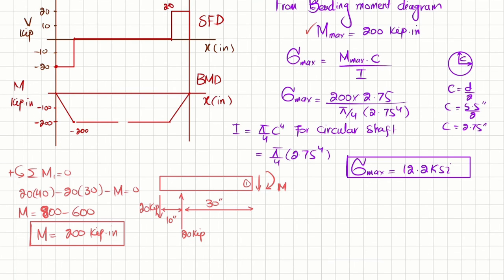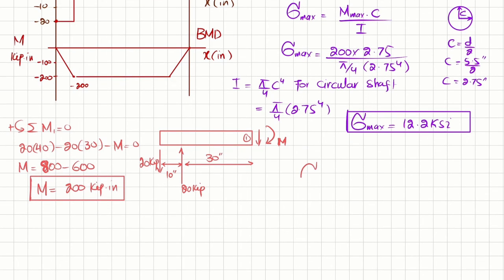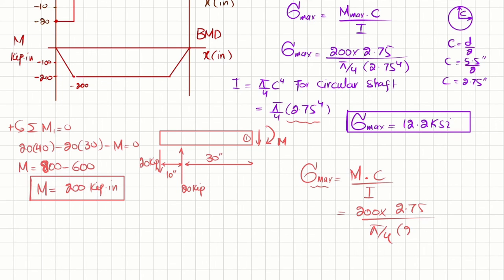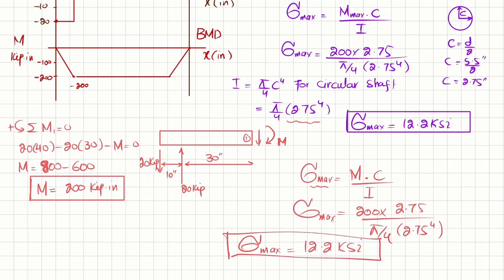With M = 200 kip·inch, applying the bending stress formula again: maximum bending stress = M·c / I = 200 × 2.75 / [(π/4) × (2.75)⁴] = 12.2 ksi. Both methods confirm the same answer, demonstrating two valid approaches to solving this problem.